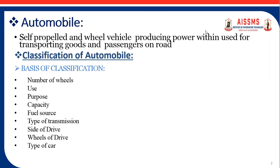In two-wheelers, we generally observe motorcycles and scooters. In three-wheelers, tempo and auto rickshaws. In four-wheelers, cars, jeeps, buses, and trucks. And in six-wheelers, buses and trucks.